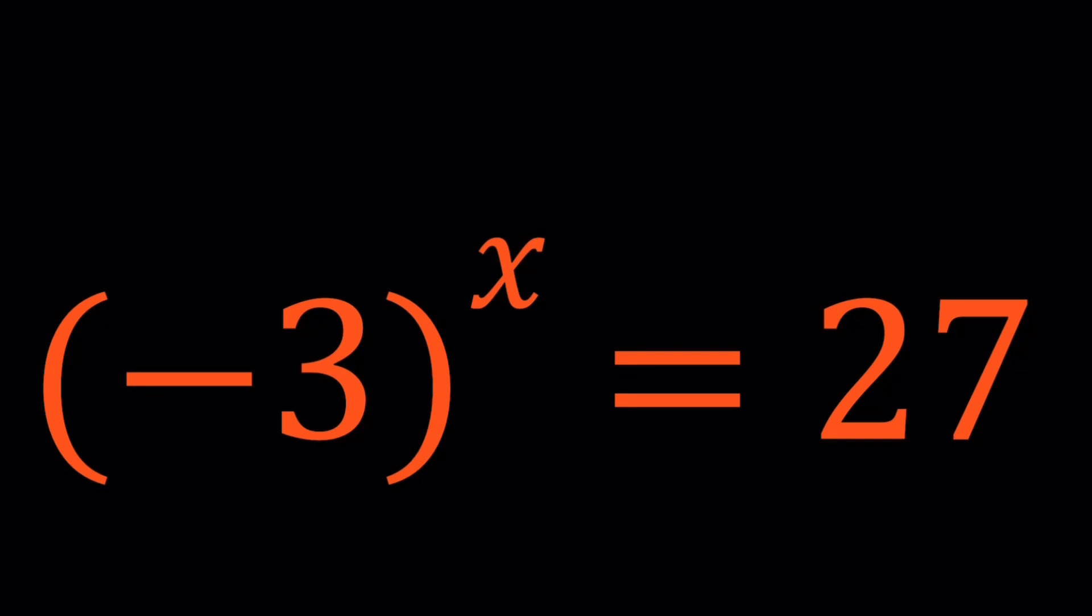Square root of some negative number equals some other number, whatever. There are some numbers. I can really quickly think of something like this: x plus 1 equals x has no solutions whatsoever. Anyways, let's go ahead and see how we can do this.